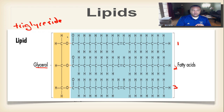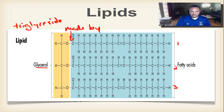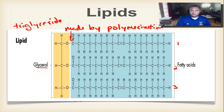The bond shown in red in the triglyceride was made by dehydration synthesis — another name, a synonym, for dehydration synthesis is condensation polymerization. This bond represents stored energy; remember, any new bond is stored energy.